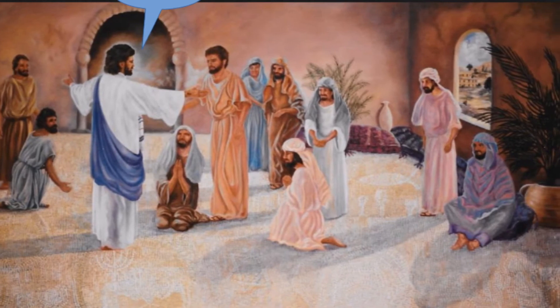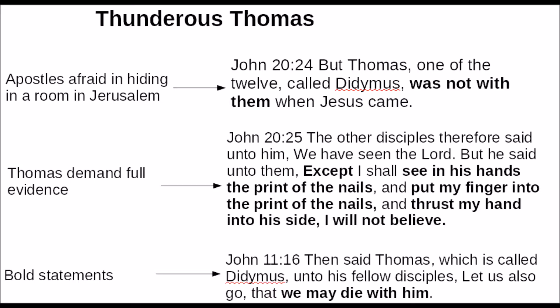Thomas was not even there — he was a Didyma. He didn't care about dying. Look at John 20:24: 'Thomas, one of the twelve, called Didyma, was not with them' when the Savior came and walked through the wall. Thomas was not scared at all. Then there's Thomas demanding full evidence — he was the only one who said, 'If he rose from the dead, I have to put my finger on his wounds and verify him physically myself.' That's a thunderous person.